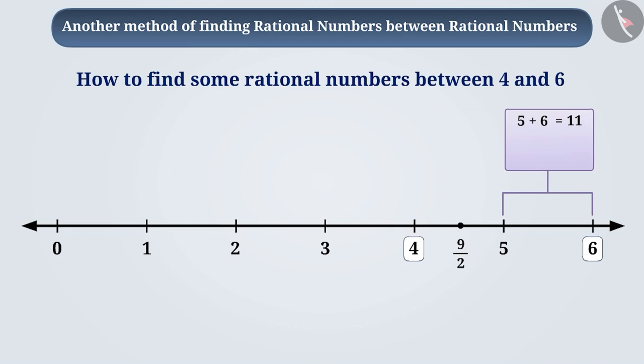Similarly, we will add 5 and 6 and divide the result by 2. From this, we get to know that the rational number in the middle of 5 and 6 is 11 by 2.